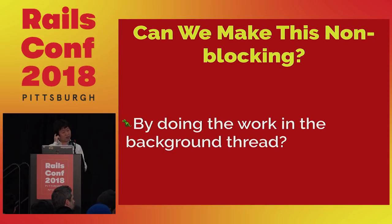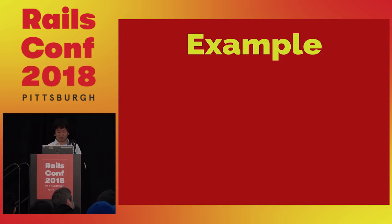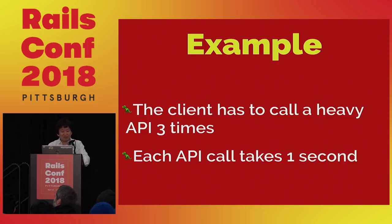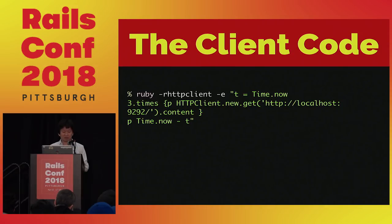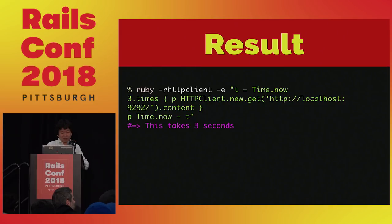So how can we make this non-blocking instead? Here's a simple example: the client makes three requests to a very heavy API that takes one second each. The API just sleeps one second, and the client calls the API three times. The result is it takes three seconds. With this I could emulate the slow API problem.